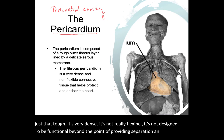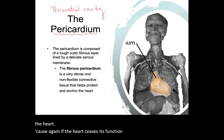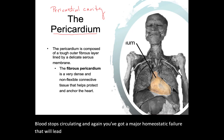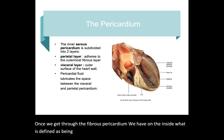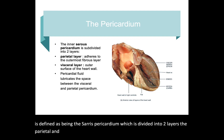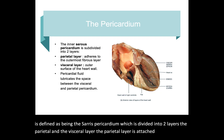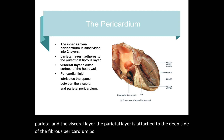If the heart ceases its function, blood stops circulating and you've got a major homeostatic failure that will lead to death. Now, once we get through the fibrous pericardium, on the inside we have what is defined as the serous pericardium, which is divided into two layers: the parietal and the visceral layer. The parietal layer is attached to the deep side of the fibrous pericardium. So when you remove the fibrous pericardium and look on the underside, you're looking at the parietal layer. Then there is a small space — what we call the pericardial space.